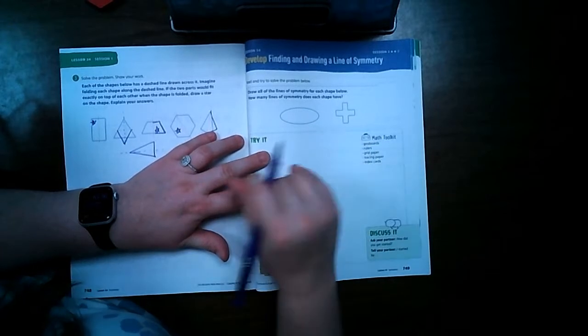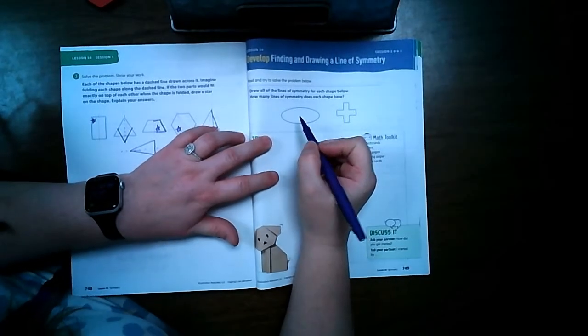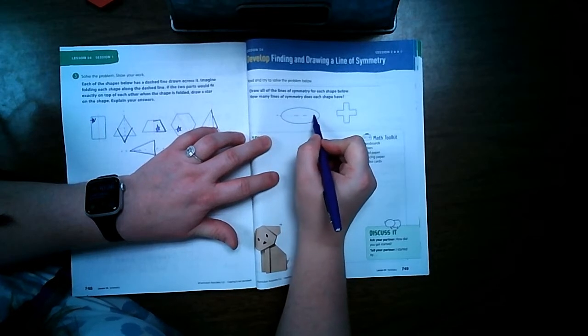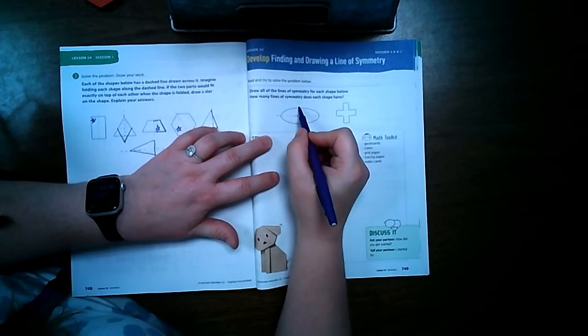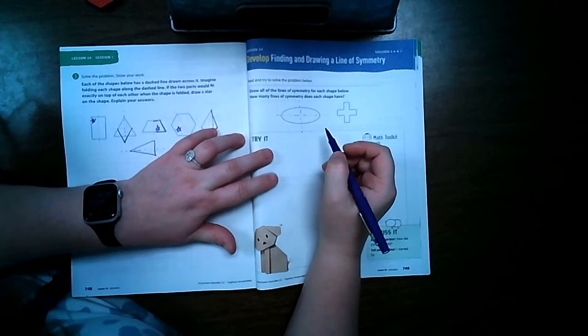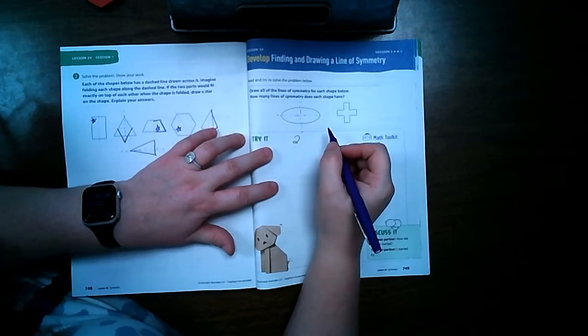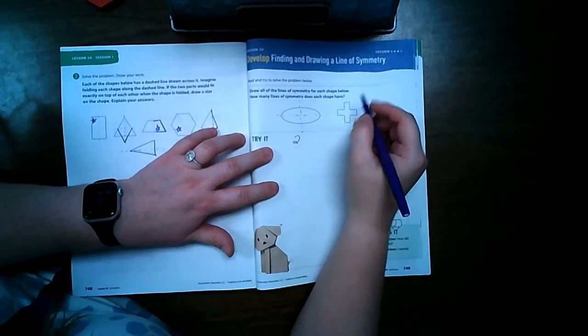From my experience I know that I could easily fold this shape right through here and right down the middle here, so this one has two lines of symmetry.